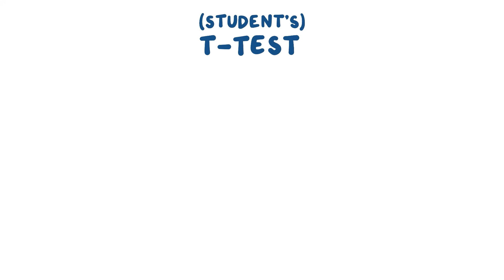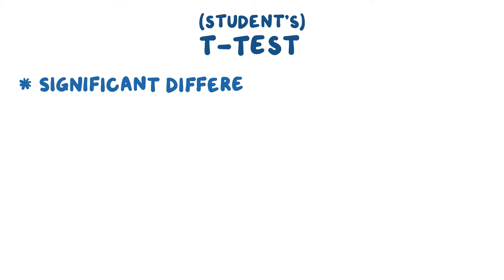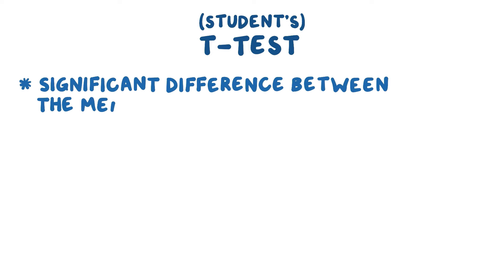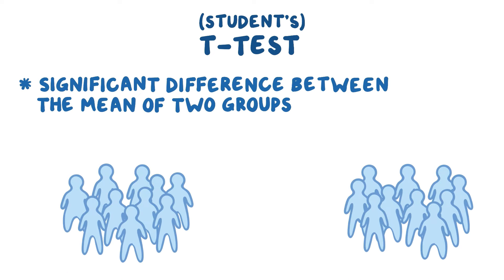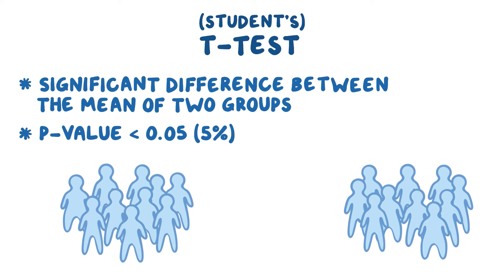The student's t-test, or simply the t-test, is a type of parametric statistical test used to determine if there's a significant difference between the means, or averages, of two groups. Significance is normally defined by a p-value of less than 0.05, or 5%.